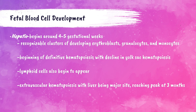Granulocytes refer to white blood cells that have secretory granules in their cytoplasm. Of the five white blood cells — neutrophils, lymphocytes, monocytes, eosinophils, and basophils — neutrophils, eosinophils, and basophils have granules and are considered granulocytes. Monocytes and lymphocytes do not normally have granules, so they are not granulocytes. Monocytes are also present during this stage. Lymphoid cells also start to appear during this stage — these lymphoblasts are the precursors for lymphocytes.